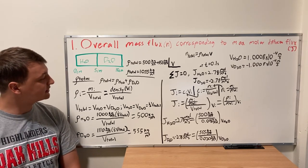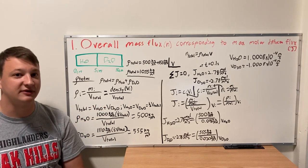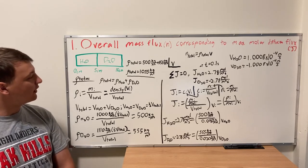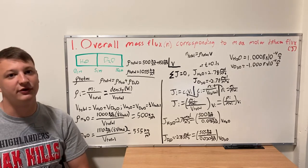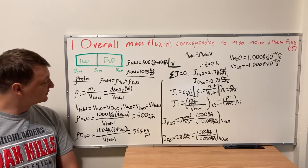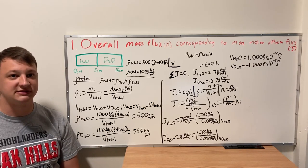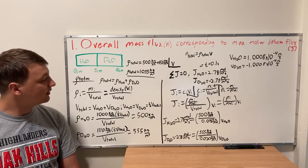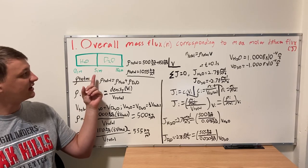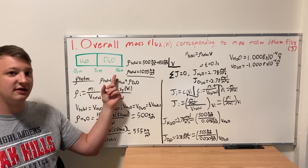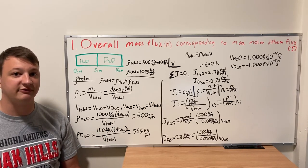We can insert density times volume for mass in this scenario since we were given density and not mass. After inserting density and volume, we look at total volume, which equals the sum of the parts: volume of H2O plus volume of deuterated water. Since H2O goes from 0 to 5 centimeters and deuterated water goes from 5 to 10 centimeters, it's split in half, so the volume of both pieces is half of the total volume.